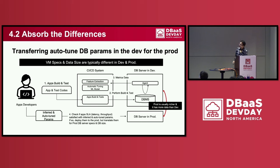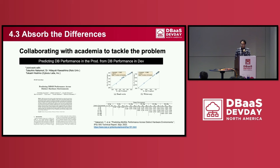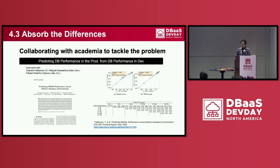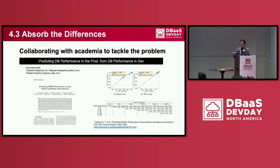Because the production environment has larger data or larger machines, we are now collaborating with academia to predict DB performance of a production environment with a given parameter setting, based on DB performance observed in the dev environment. By using this prediction model, we can determine if an autotuning result can meet the performance requirement in the production environment. This research is ongoing.